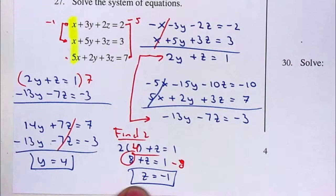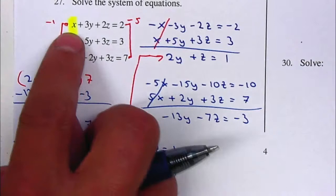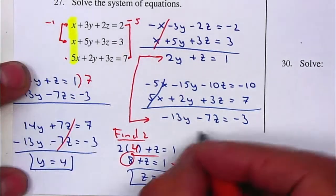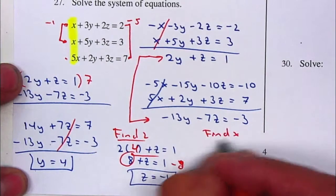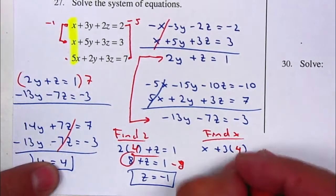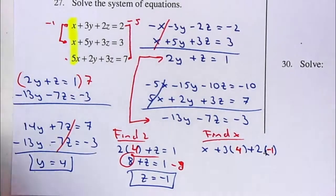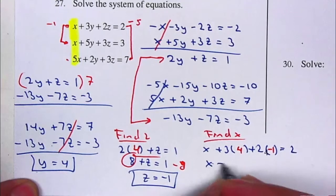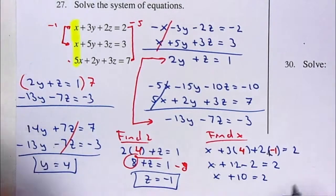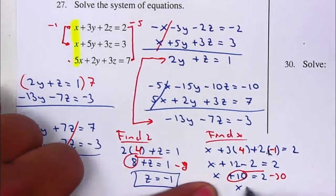I have Y and I have Z, so now I'll take both values and plug them into an equation with three variables to solve for X. I'll plug into the first equation. That gives X plus 3 times 4 plus 2 times negative one equals two — X plus 12 minus 2 equals two — X plus 10 equals two. Moving the 10 to the right gives X is equal to negative eight.